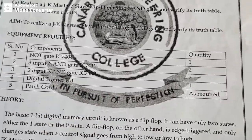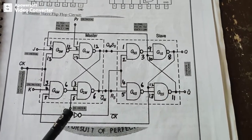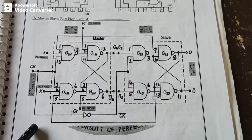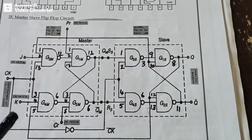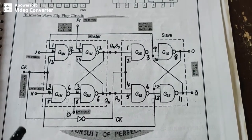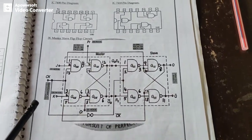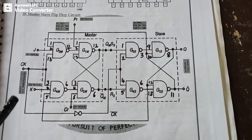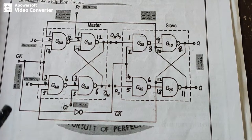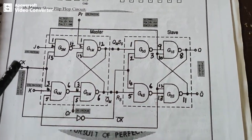Flip-flop is a building block in memory design. It is basically used to store either one bit — a one or a zero. In flip-flops we have three types: RS (set-reset), JK, T (toggle), and D (data).